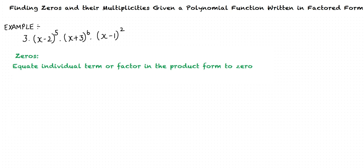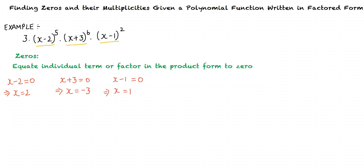In order to determine the zeros, we equate each individual factor in the product form to zero. Thus, x minus 2 equals zero, which implies x equals 2. Next, x plus 3 equals zero, which implies x equals negative 3. Finally, x minus 1 equals zero, hence x equals 1. Thus, 2, negative 3, and 1 are the zeros of the given polynomial function.